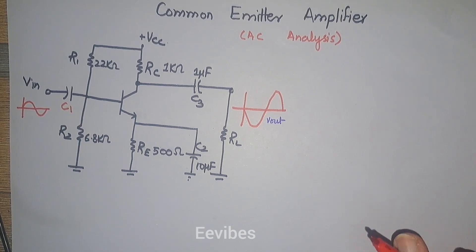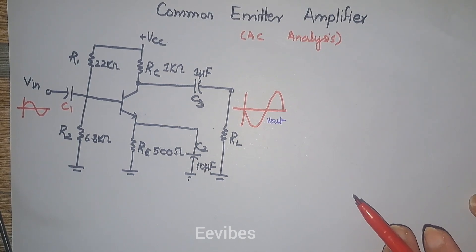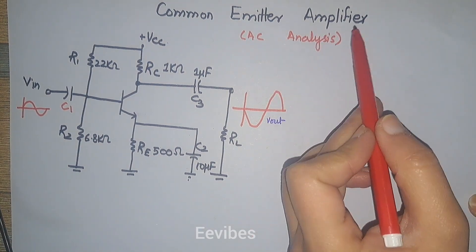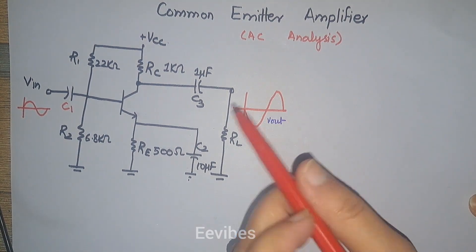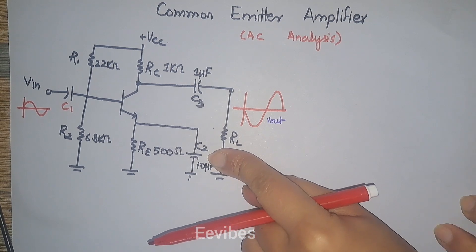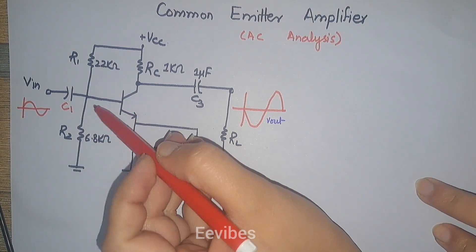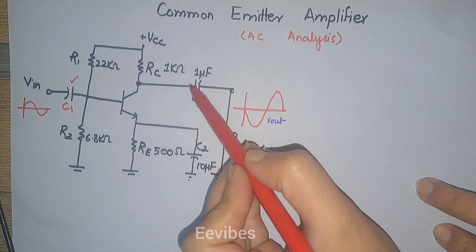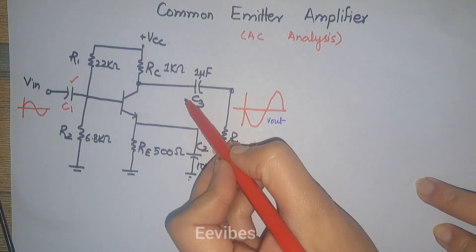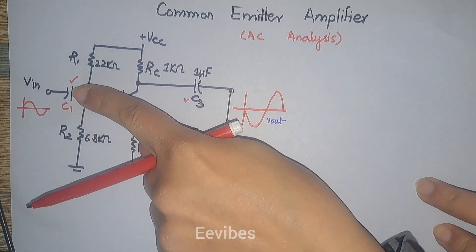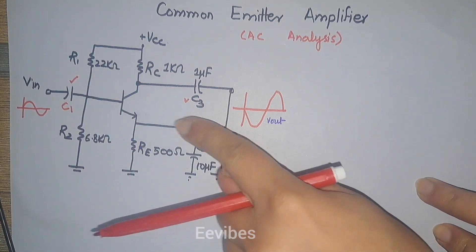Assalamualaikum everyone, this is Asma Mushtaq from the Double E Vibes. In this tutorial I am going to perform the AC analysis of the common emitter amplifier. This amplifier has been designed using the voltage divider bias, and three capacitors C1, C2, and C3 are used which provide AC coupling.